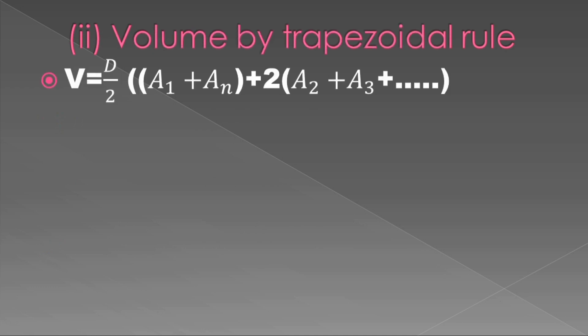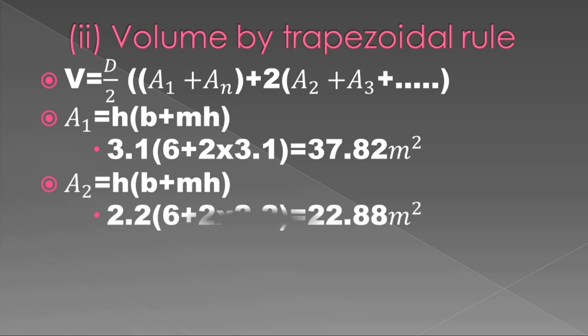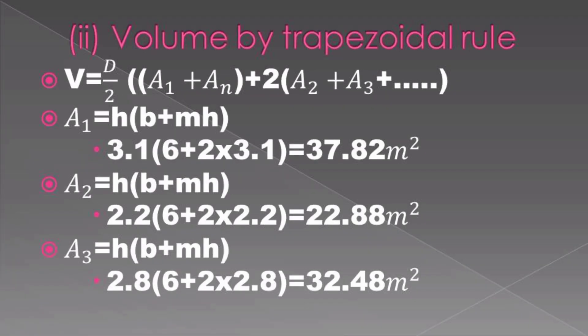In our second question, we are told to use the trapezoidal and the prismoidal rule. First, we start by calculating using the trapezoidal rule. Under the trapezoidal rule, volume is found by this method: V = (D/2) × [(A₁ + Aₙ) + 2(A₂ + A₃ + ...)].